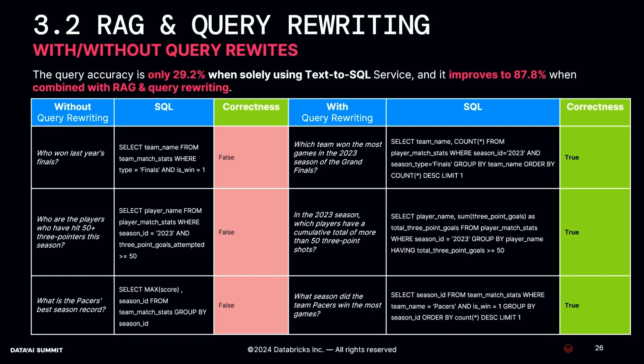Here's an NBA News example. Without query rewriting, the user asks: 'What are the players who have hit 50-plus three-pointers this season?' The SQL generated has a WHERE condition, but the result is wrong. Because what you really want to ask is: 'In the 2023 season, which players have a cumulative total of more than 50 three-point shots?' With query rewriting, the model generates a query with GROUP BY and the time condition included. The burden on the text-to-SQL model is shared by the query rewriting layer.